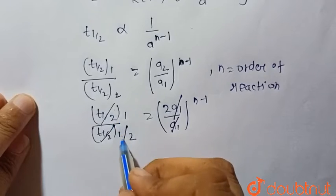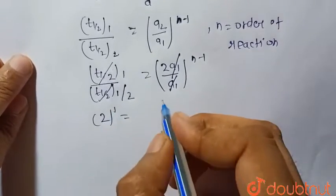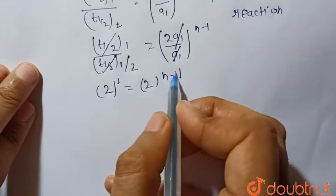This is 1 upon 1/2, that is 2 to the power 1 upon 2 to the power (n-1). So equate their exponents.